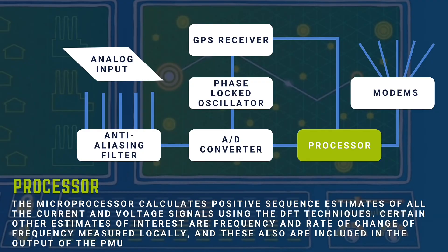Processor: The microprocessor calculates positive sequence estimates of all the current and voltage signals using DFT techniques. Other estimates of interest are frequency and rate of change of frequency measured locally, and these are also included in the output of the PMU.